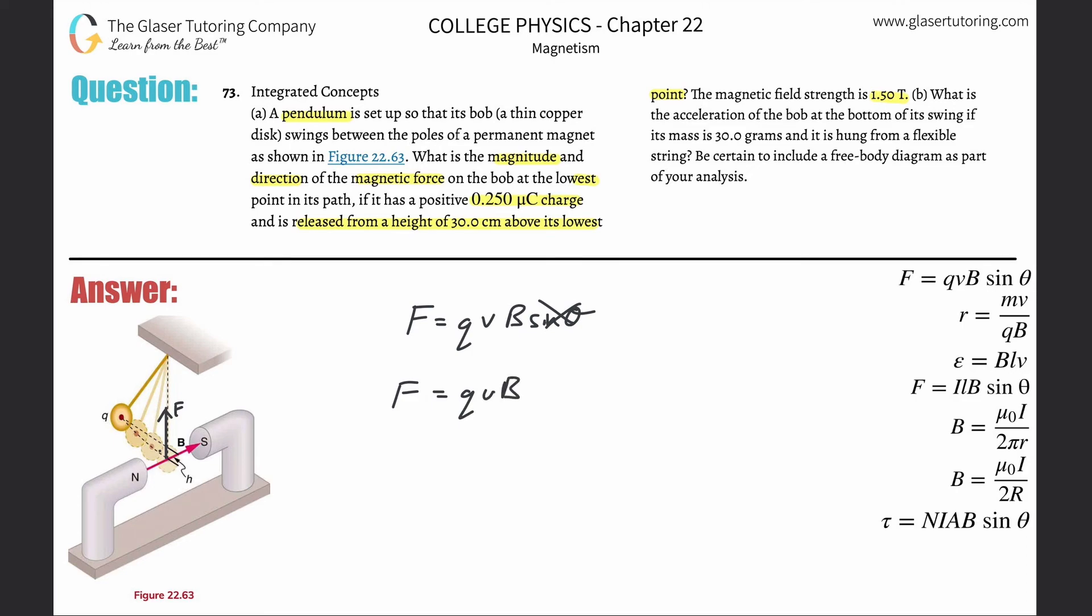Now the only thing we don't know is the velocity. We know the charge, they told us, we can convert it. They told us the magnetic field, great. But the velocity, the only thing they told us in terms of the velocity is the height in which it was dropped. This thing was dropped from a height of 30 centimeters. First of all, we need that in meters so this is just 0.3 meters.